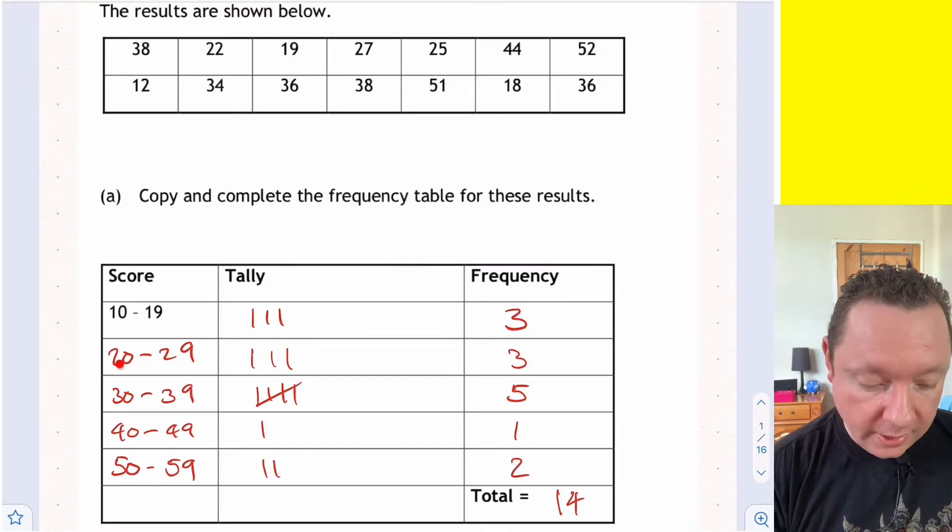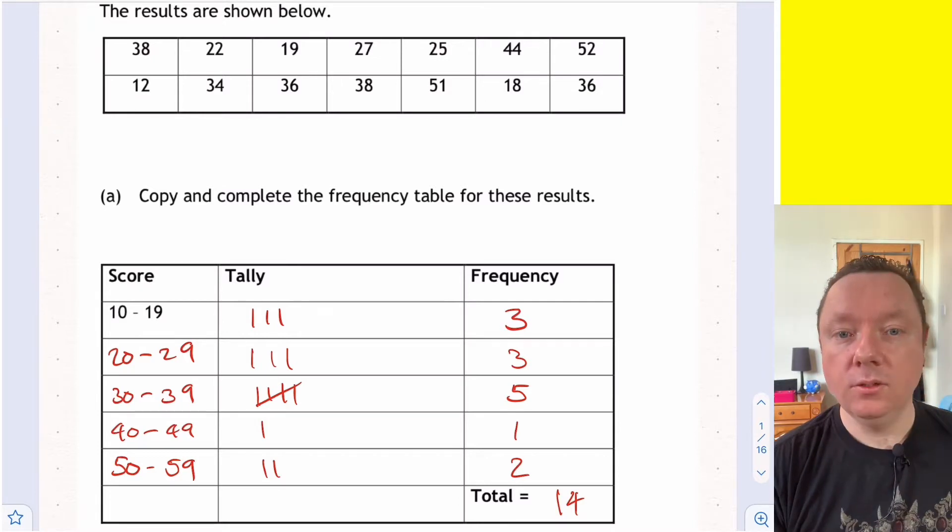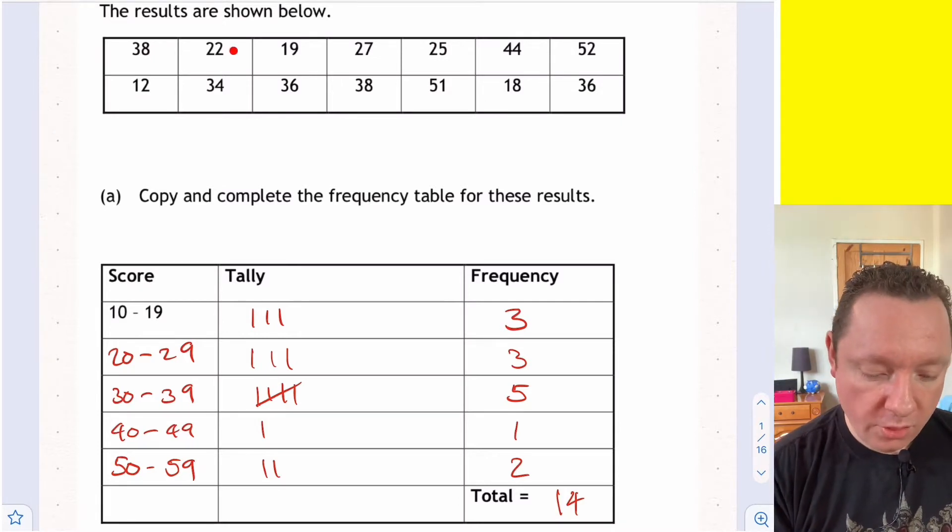20 to 29, well I've got 1, 2... missed 1, start again. 1, 2, 3. That's 3 in total.